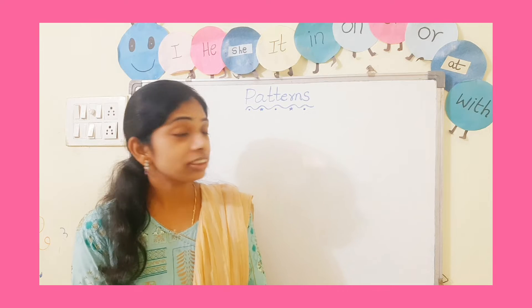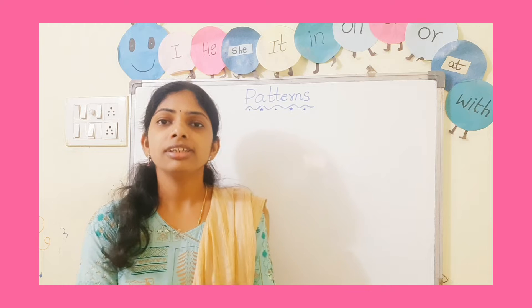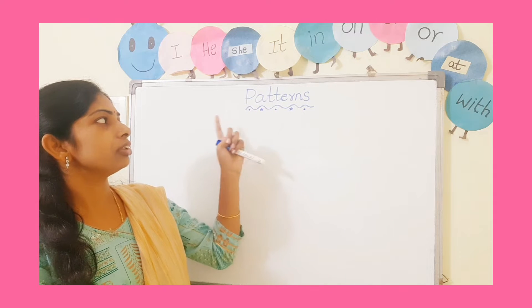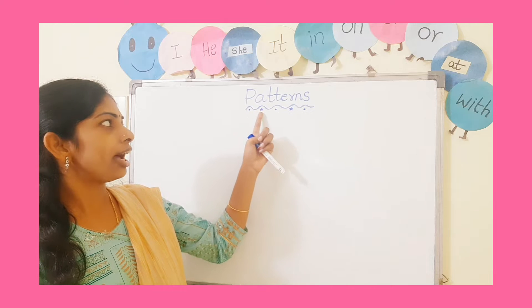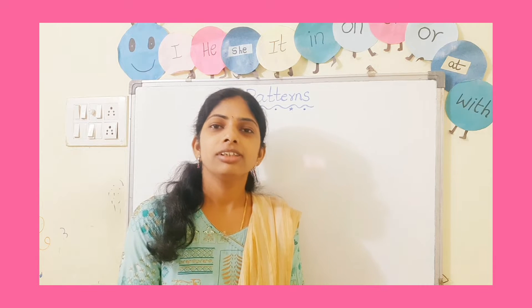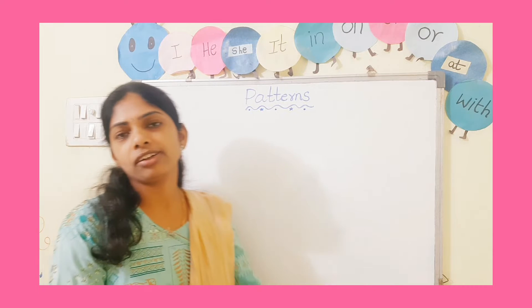Hello everyone, welcome back to the channel. Hope you all are doing good. Today in this video we are going to discuss about patterns. We can see patterns everywhere — patterns on your dresses, patterns on walls, patterns in things and patterns in numbers. First grade children are able to easily identify patterns in colors, patterns in shapes, patterns in things. If you observe the heading, you can see the pattern of shapes: dot, star, dot, star, dot — so this is a pattern.